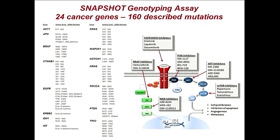The Snapshot assay we launched in about 2008 had 24 cancer genes — a hotspot mutation assay — and it served us very well. Looking back with NGS data, this panel is actually quite cost-effective, and as a first-line screen it's really not such a bad idea.